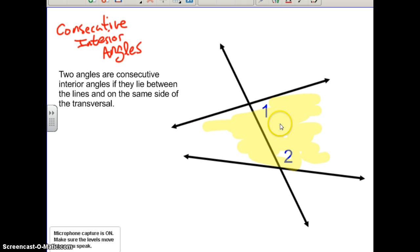So you have this example of consecutive interior, and then you could move both angles to the other side and you would have a second example of consecutive interior angles.